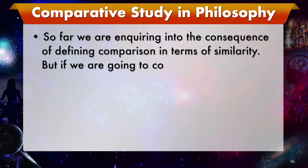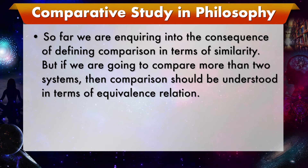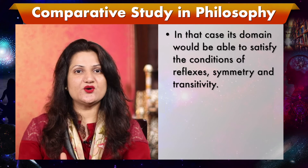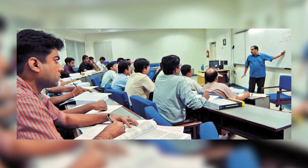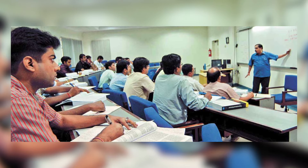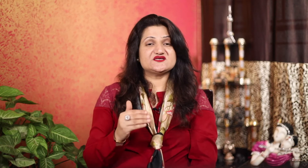So far we have been enquiring into the consequences of defining comparison in terms of similarity. But if we are going to compare more than two systems, then comparison should be understood in terms of equivalence relation. In that case its domain would be able to satisfy the conditions of reflexivity, symmetry, and transitivity. We are concerned here with equivalence relation because it has a property very important from the viewpoint of comparative study and would create a problem for supporters of non-comparative study. An equivalence relation in a class determines a natural partition of that class, and a natural partition of a class gives us an equivalence relation. Partition or division of a class into non-empty disjoint subclasses is associated with the division of the above type of subclasses.